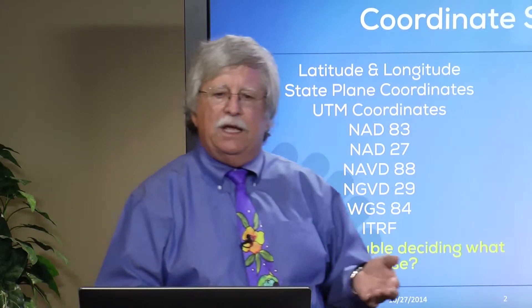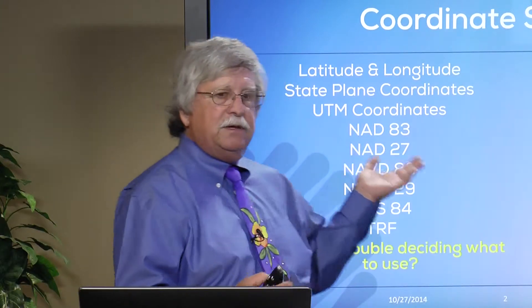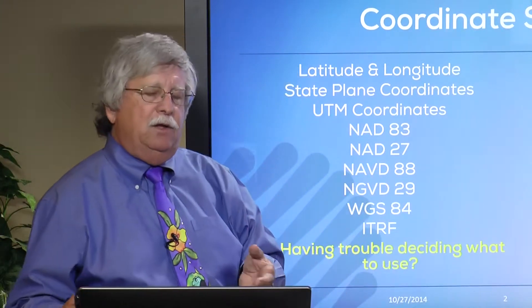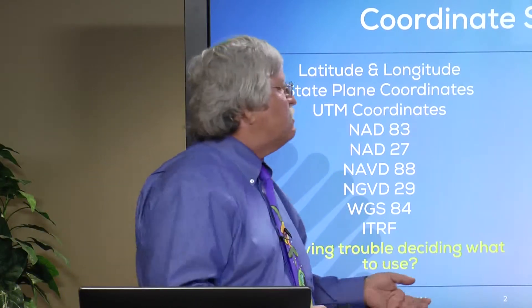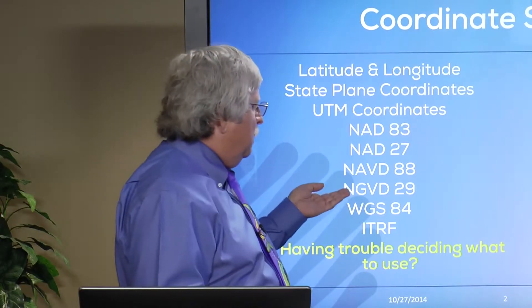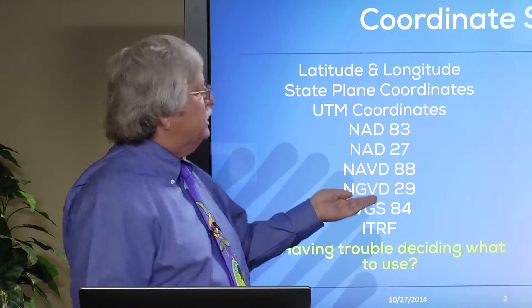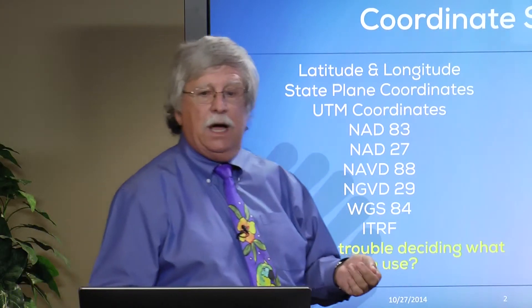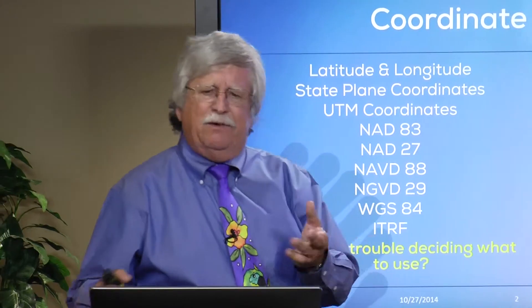They may understand that they have latitude and longitude, or even state plane or UTM coordinates, but understanding the datum — is it NAD 83 or NAD 27, NAVD 88 or NGVD 29, WGS 84, ITRF, etc.? I've actually had users call or email me saying they have data in NGVD 29, which is a vertical datum — the National Geodetic Vertical Datum of 1929 — and they need to get it to NAD 83, which is a purely horizontal datum. And you're like, well, you can't do this. They're not related.